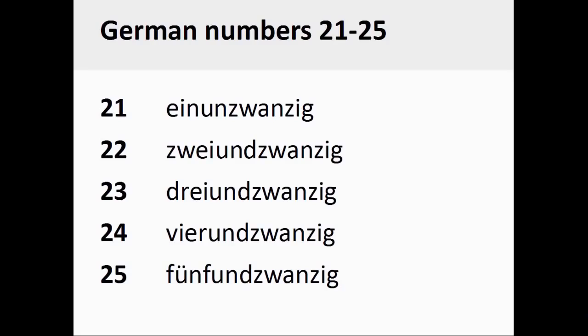The German numbers 21 through 25, however, are interesting. They are pronounced einundzwanzig, zweiundzwanzig, dreiundzwanzig, vierundzwanzig, fünfundzwanzig.